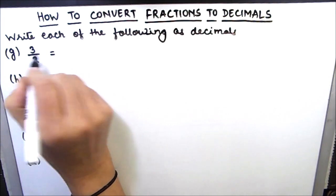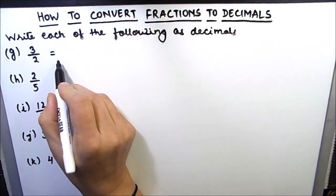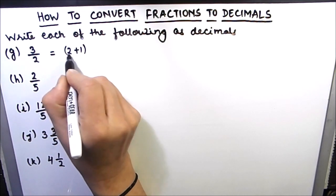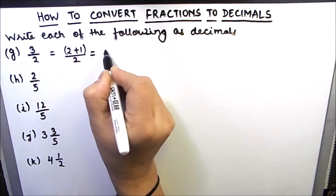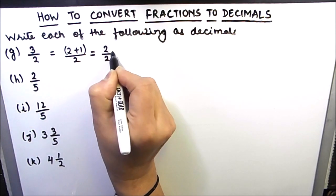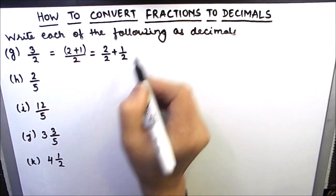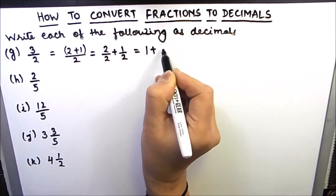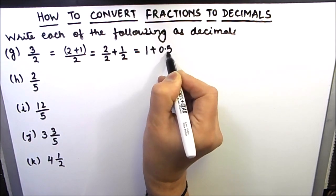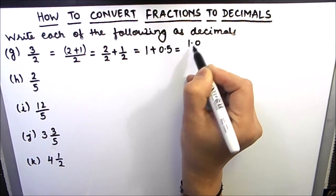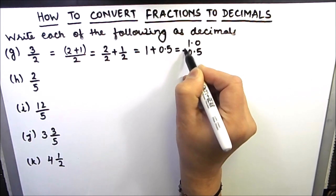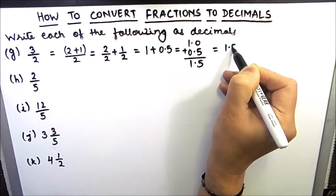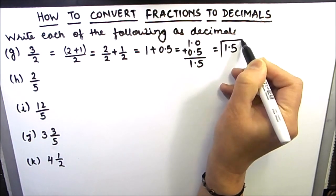The next one in the question is 3 by 2. We can convert this in two ways. We can write 3 as 2 plus 1 divided by 2, which gives us 2 by 2 plus 1 by 2. So 2 by 2 is 1, and 1 by 2 is half, which is 0.5. So this will become 1.0 plus 0.5, which is equal to 1.5. So the final answer will be 1.5.